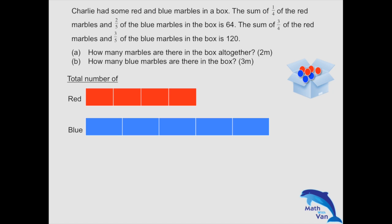So one quarter of the red, so we need to say it's one block of red, plus two fifths of the blue, which is two blocks of blue. That will give us 64.